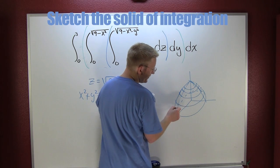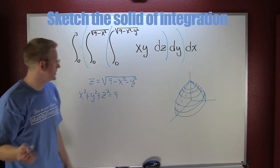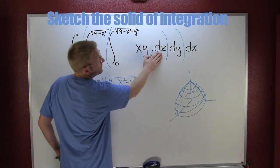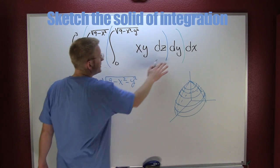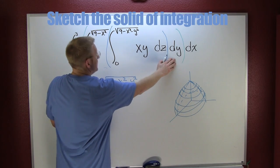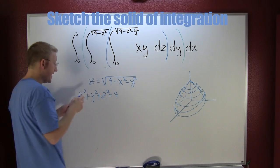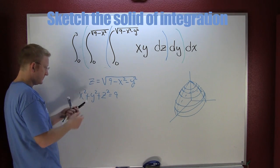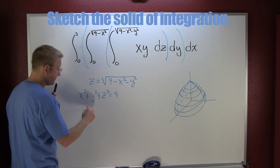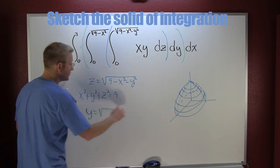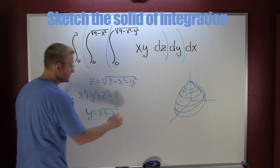Now we'll see if we can get some more restrictions. Continuing to break this triple integral down, the next part is a function for y in terms of x. So y is equal to the square root of nine minus x squared.